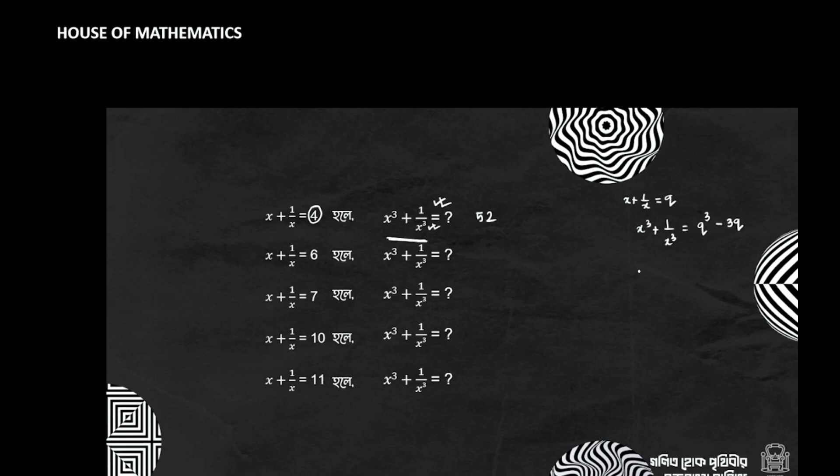To say this, my students, friends, what do we do with the answer? 4 cube, so 4 cube is 64 minus 3 times 4. What is the answer? We say minus 12. This is the answer, 52.